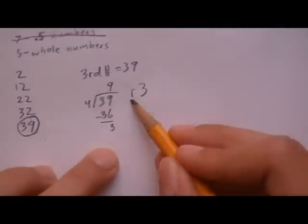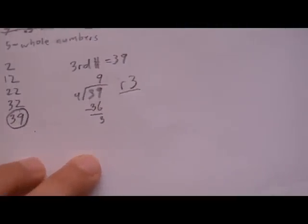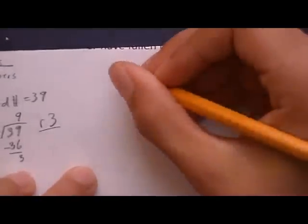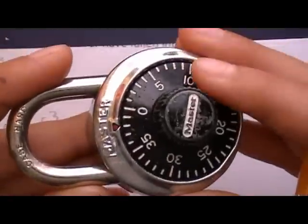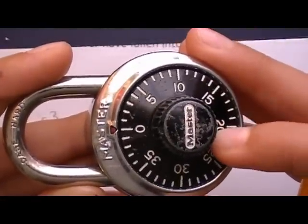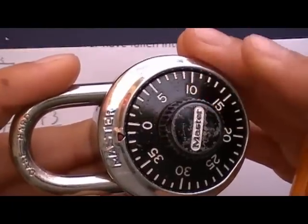So now the important thing here is your remainder. So you take your remainder and you add 4 to it until you get to the highest possible number in your combination, which is 39 because it goes from 0 all the way around to 39.